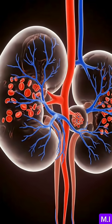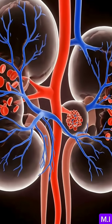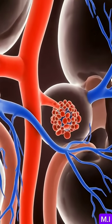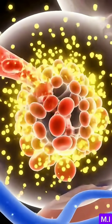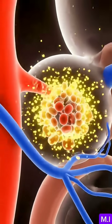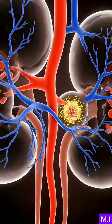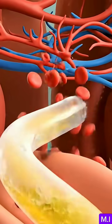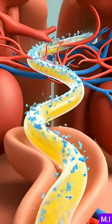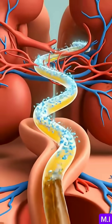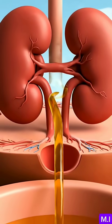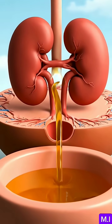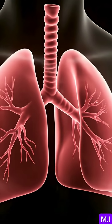The kidneys filter excess water and waste from the bloodstream using tiny filtration units called nephrons. During urine formation, the kidneys filter water, reabsorb what the body needs, and send excess water and waste to the bladder.